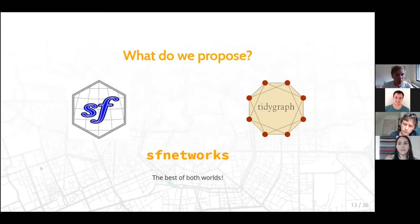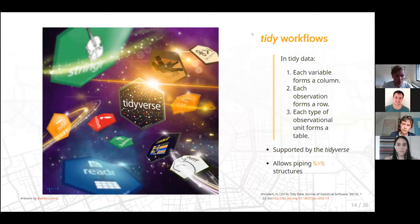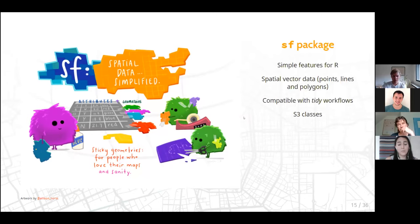What are the main characteristics of SFnetworks? First, it is compatible with tidy workflows. As defined by Hadley Wickham: each variable forms a column, each observation forms a row, each type of observational unit forms a table. We want to support this tidyverse workflow, using the SF package which supports the simple features standard for R — basically for points, lines, and polygons — which is already compatible with tidy workflows.